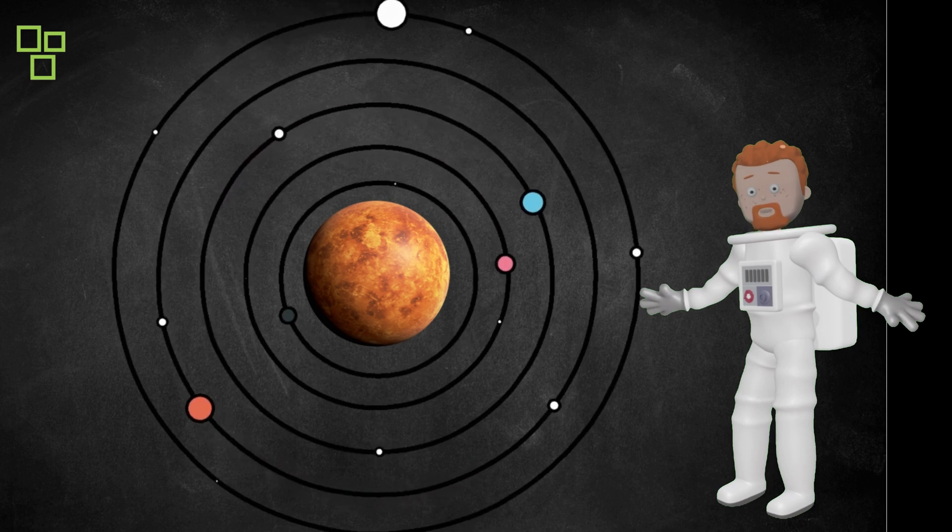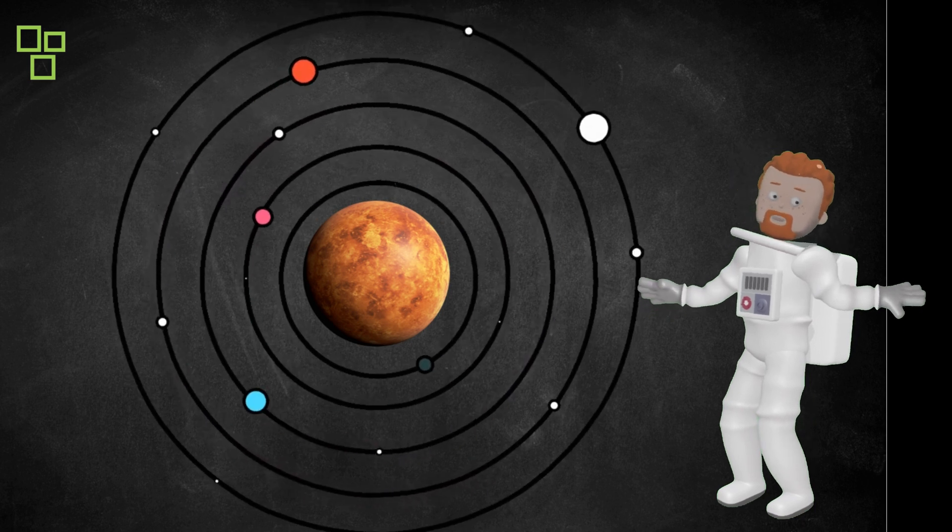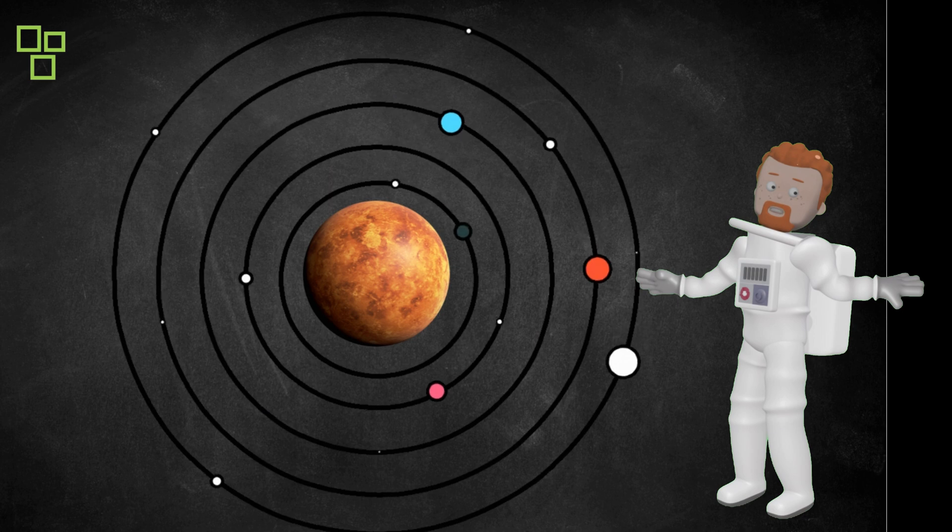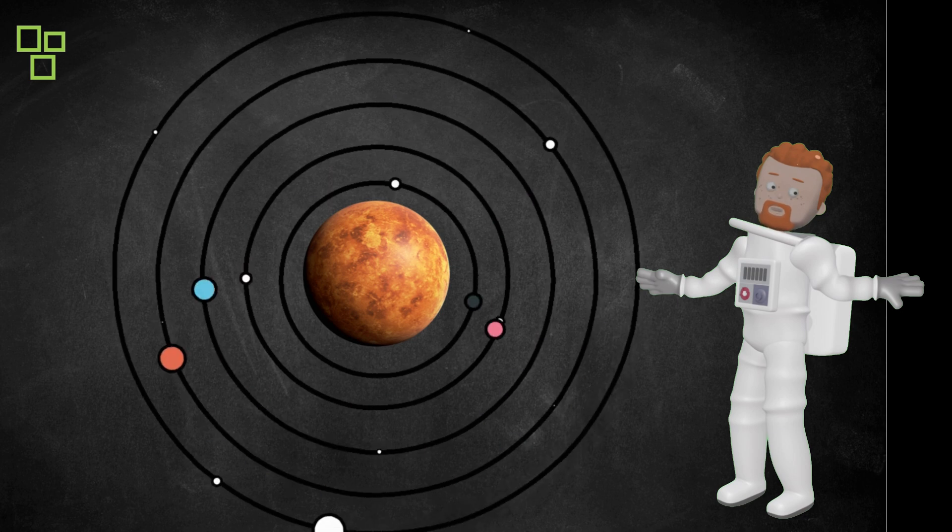Mars is the fourth planet from the sun and might be our best hope for future human colonization. It's also home to the largest volcano length.